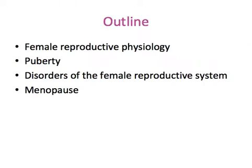For today's topic, we will be talking about a review of the female reproductive physiology. We'll review the events that happen during puberty, then move on to discuss the disorders of the female reproductive system, and lastly we'll talk briefly about menopause and hormone replacement therapy.